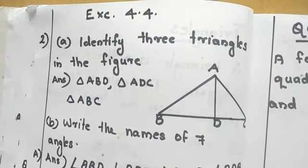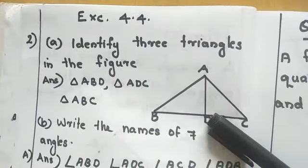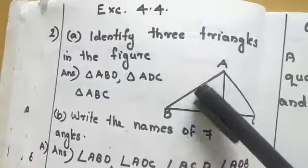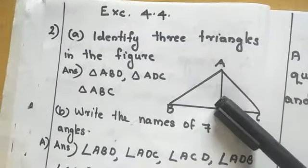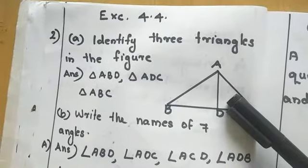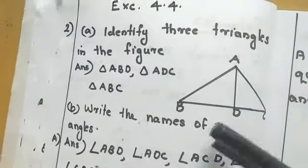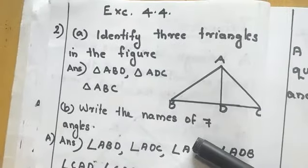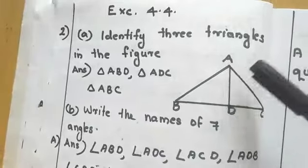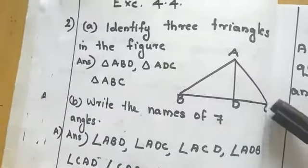Here is a question: from the given figure we have to identify three triangles. Which are the three triangles? The first is triangle ABD — the small triangle. The second is triangle ADC. Then the bigger triangle ABC. So the three triangles are triangle ABD, triangle ADC, and triangle ABC.